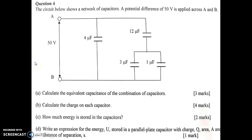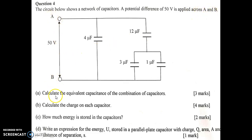Formative Test 1, Question 4. The circuit below shows a network of capacitors. A potential difference of 50 volts is applied across A and B. Calculate the equivalent capacitance of the combination of the capacitors.